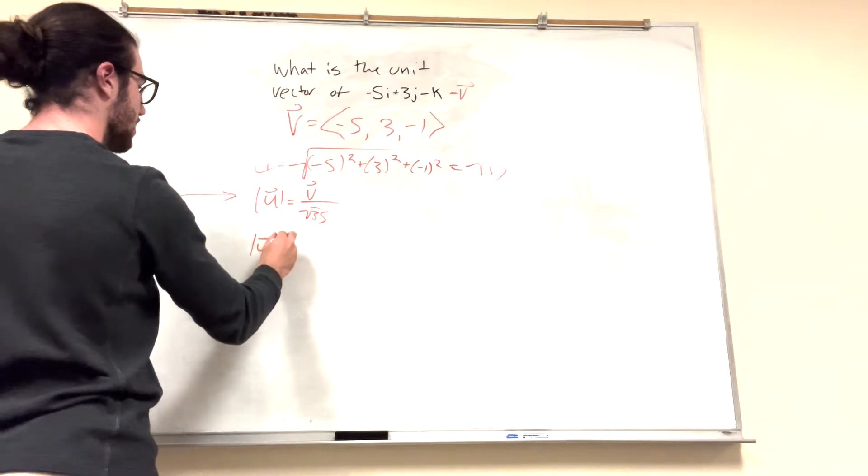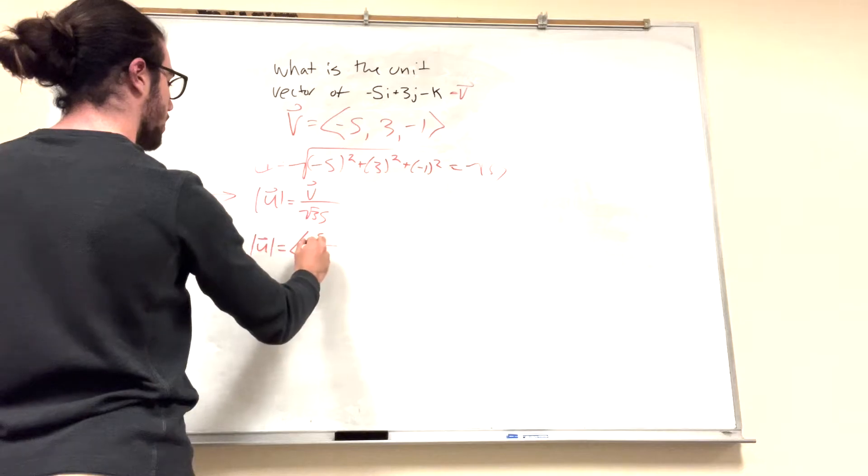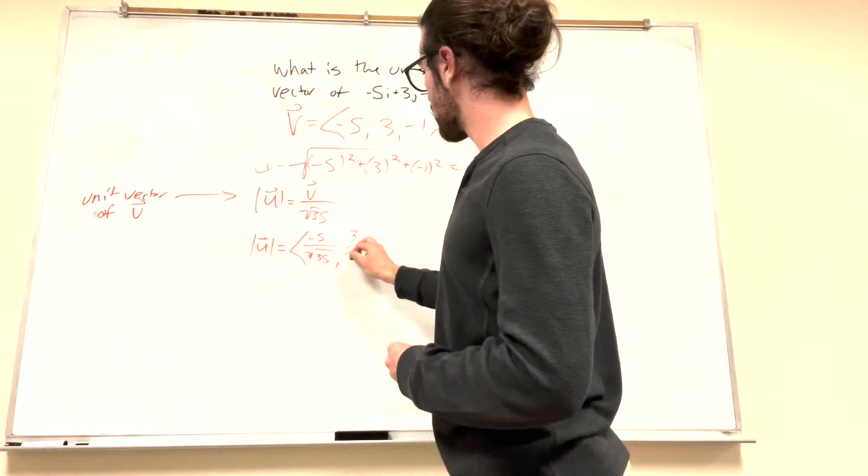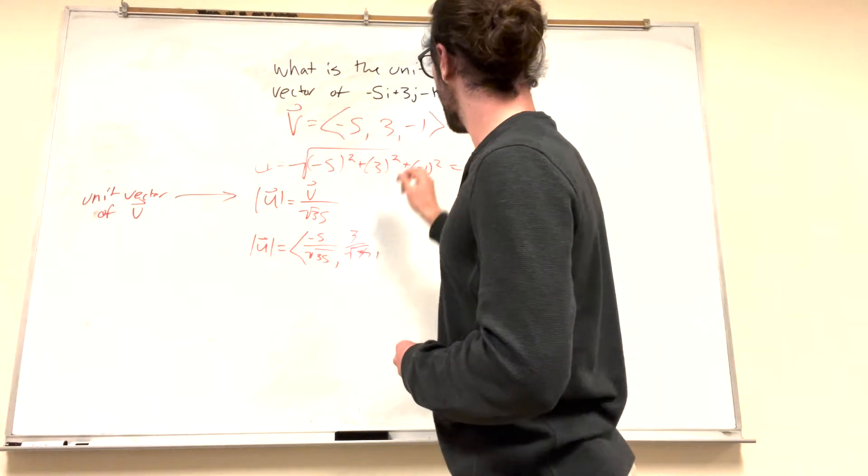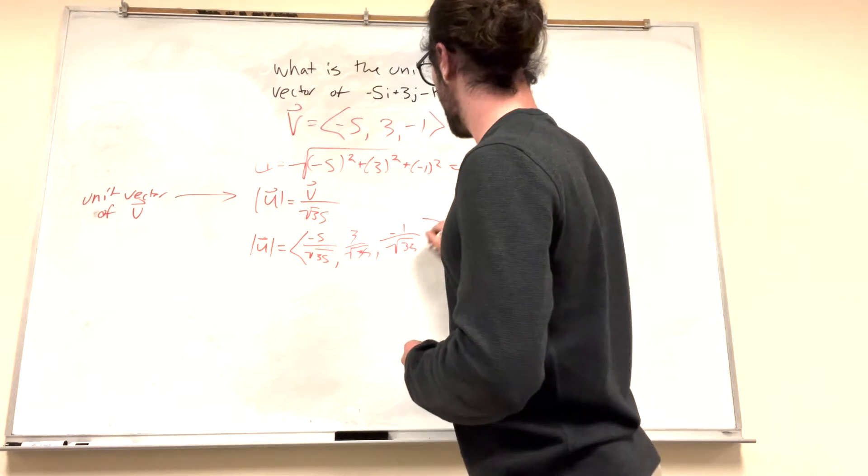The square root of 35. So, basically, it's going to be equal to negative 5 over square root of 35, 3 over the square root of 35, and negative 1 over the square root of 35. And that's our answer right there.